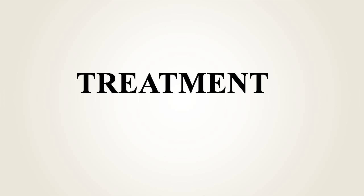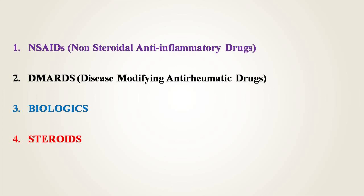There are four main categories of drugs employed in the management of rheumatoid arthritis. The first category is non-steroidal anti-inflammatory drugs (NSAIDs). The second category is disease-modifying anti-rheumatic drugs (DMARDs). The third category is biological agents, and the fourth category is steroids.